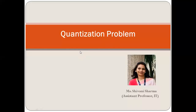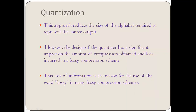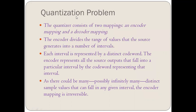The next topic is the quantization problem — what problems we face due to quantization. First, a quantizer consists of two mappings: the encoder mapping and the decoder mapping. The encoder mapping is at the site of the source, and the decoder mapping is at the site of the receiver.